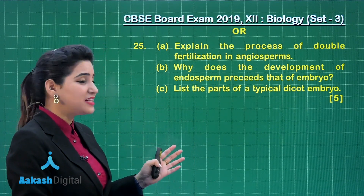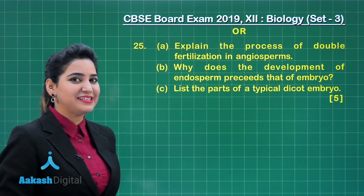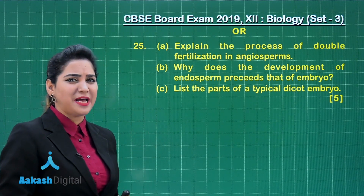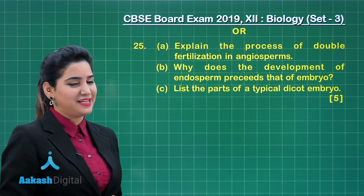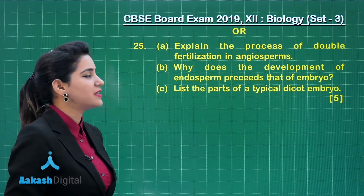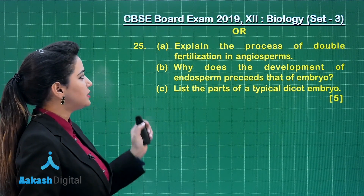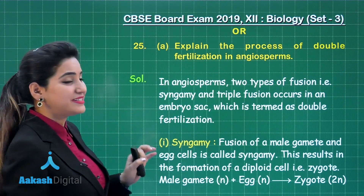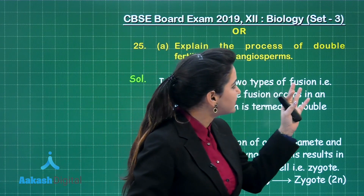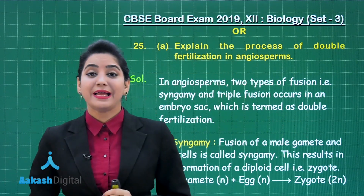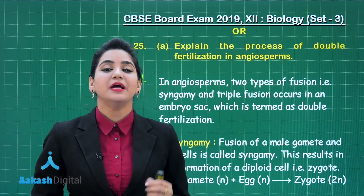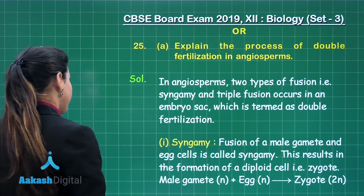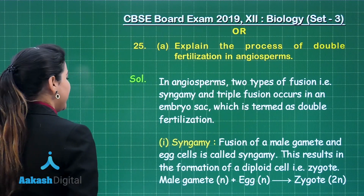This question has three parts — A, B and C — and this is a five-marker question coming straight from the chapter on sexual reproduction in angiospermic plants. Part A: explain the process of double fertilization in angiosperms. This part fetches you two marks.